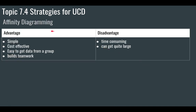Advantages of affinity diagramming: it's simple to do — you get together in a group of people, it's cost effective, it's easy to get data from a group, and it builds teamwork. Disadvantages: it can be quite time consuming and could get quite large. Usually somebody is tasked with putting all the data together into categories once they're grouped, which can be quite time consuming.